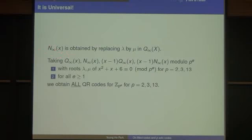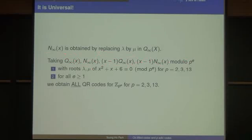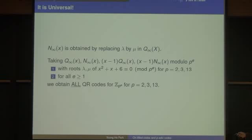Once you know Q_infinity(x), N_infinity(x) is obtained by replacing lambda by mu. So now we know all four generators over the p-adic integers. Taking these polynomials modulo p^e, where lambda and mu are roots modulo p^e, we obtain all quadratic residue codes over Z/p^e for p equals 2, 3, and 13.